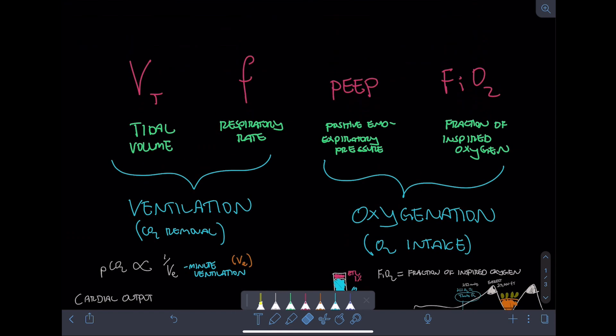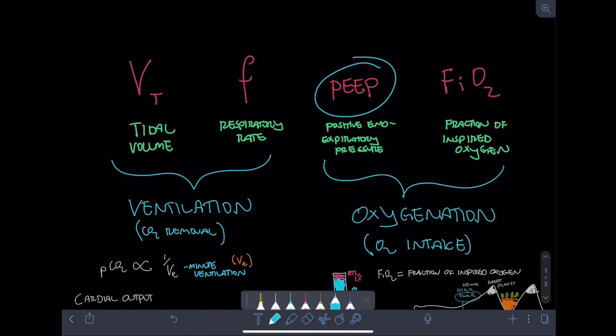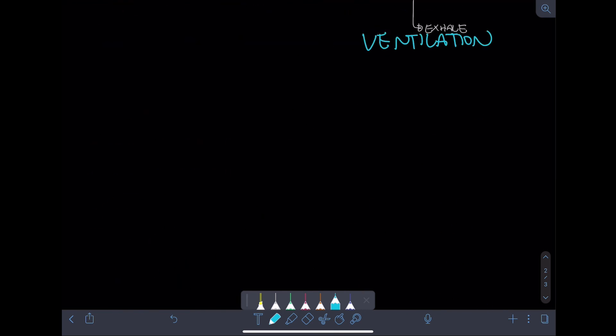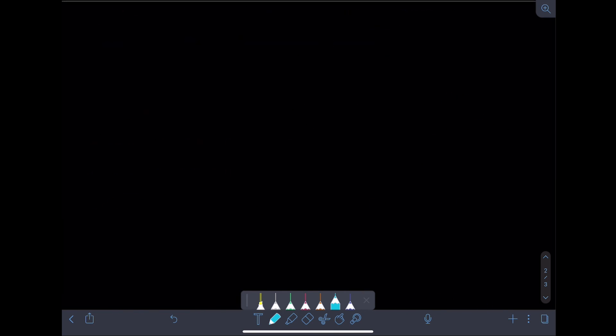So now that we've covered FiO2, the final setting is the one that often causes the most confusion. This setting is called positive end expiratory pressure, or PEEP.